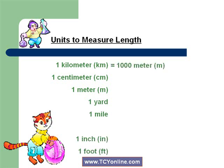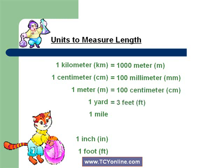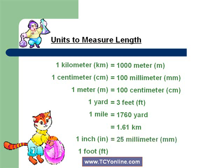We know that 1 kilometer equals 1000 meters, while 1 centimeter equals 100 millimeters. 1 meter equals 100 centimeters. 1 yard equals 3 feet. 1 mile equals 1760 yards. Also, 1 mile equals 1.61 kilometers. And 1 inch equals 25 millimeters. And finally, 1 foot equals 12 inches. Always remember these conversion formulas to solve the problems.